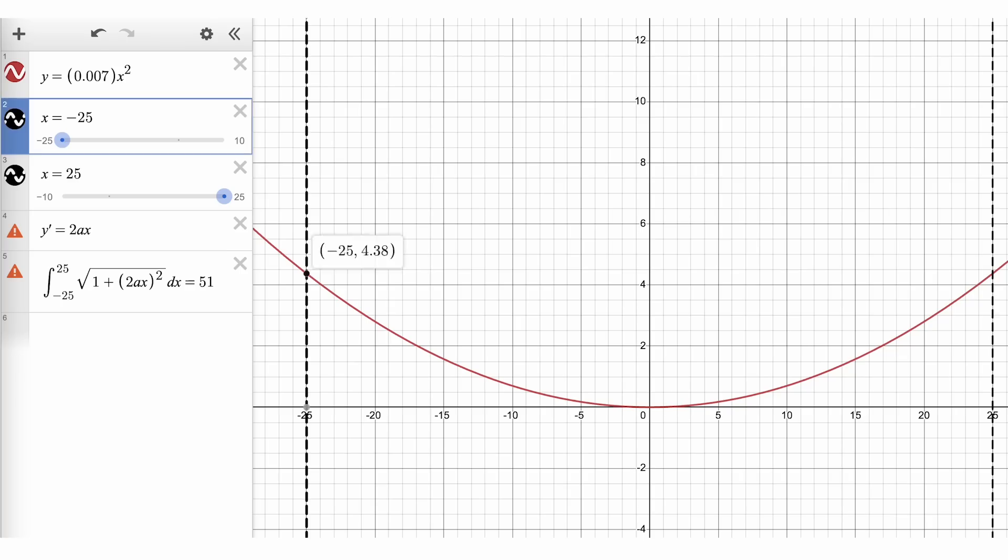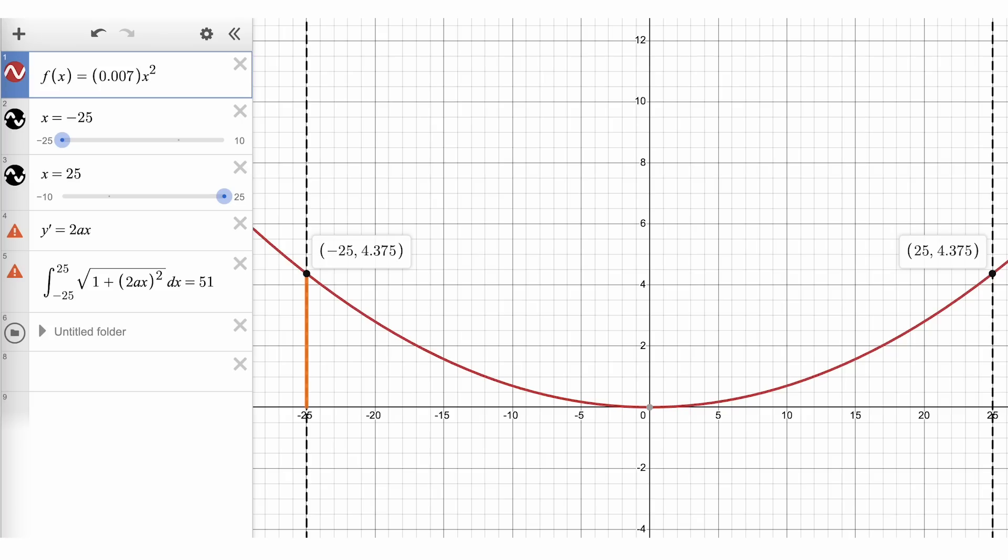The endpoints of our curve are at x equals negative 25 and x equals 25, and the distance that they are above the x-axis is the same distance that the rope is sagging down. By evaluating our parabolic curve at x equals 25 or x equals negative 25, we get a value of 4.375 units.